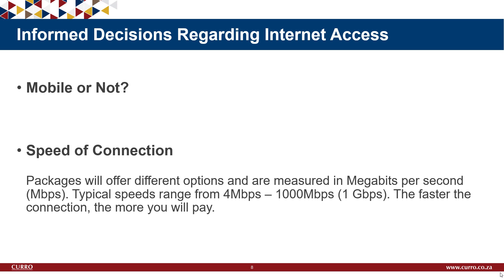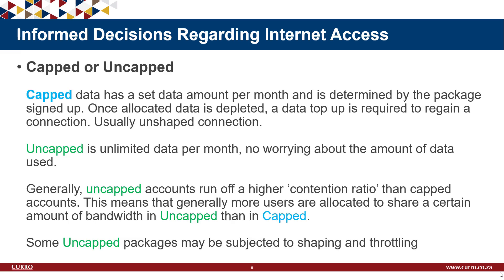Next, consider the speed of the connection. Packages offer different options measured in megabits per second (Mbps). Typical ranges start at about 4 Mbps and go up to 1,000 Mbps — one gigabit per second — for fiber internet. The faster the connection, the more you will pay, so you pay for the speed you are getting. Speed generally goes hand-in-hand with wired connections.